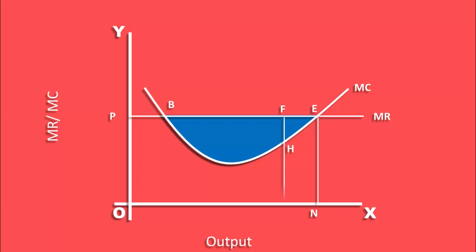If the producer produces less than N, say L, he cannot be in equilibrium because marginal cost is less than marginal revenue. His marginal cost is LH, his marginal revenue is LF.